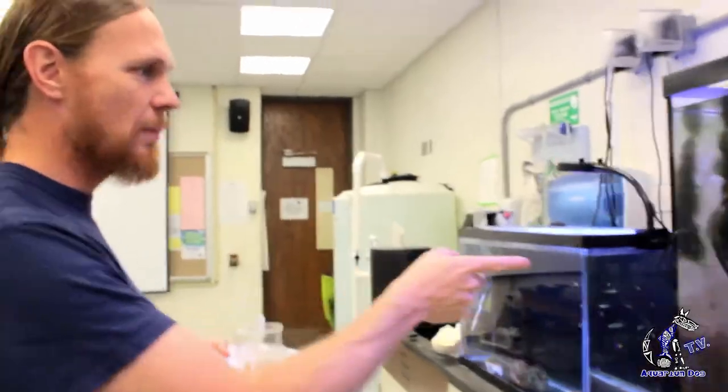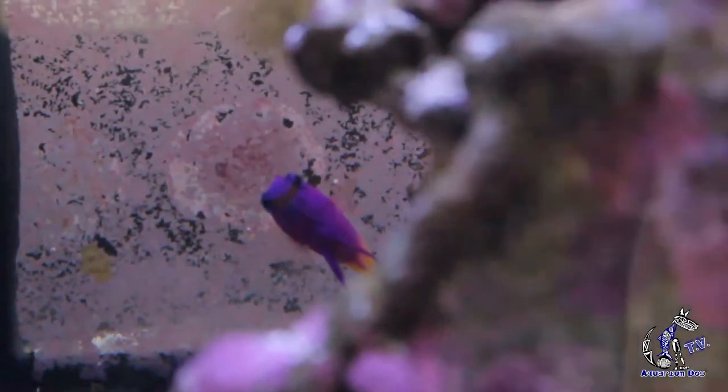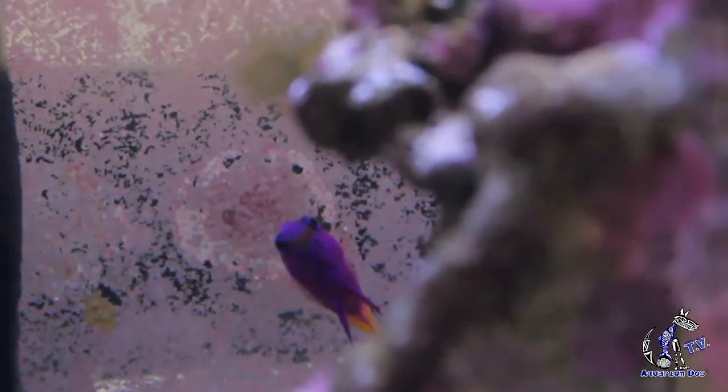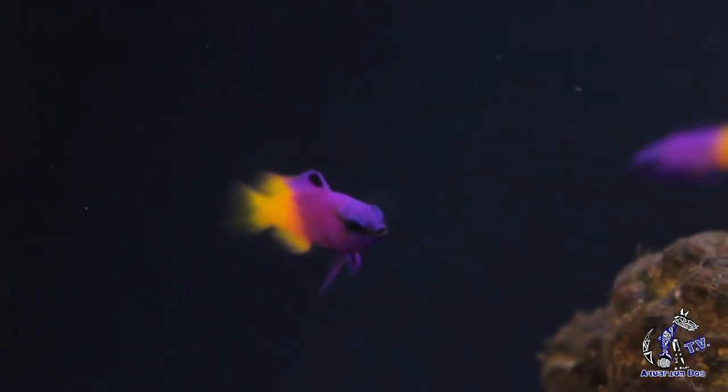So this is Gramma loreto, the fairy basslet, also known as the royal gramma. Very common, inexpensive fish, very closely related to this guy. And found in the same habitat, same depth range. So this is my broodstock, just these two. They spawn regularly, although their spawning season is coming to an end now. And these are some of their young that I raised over the last couple of months.